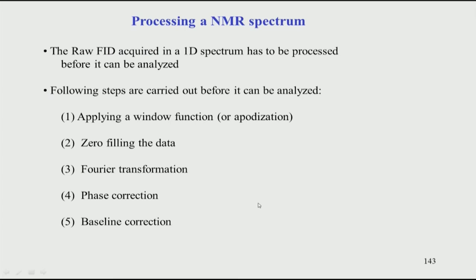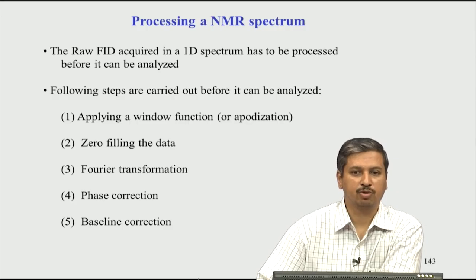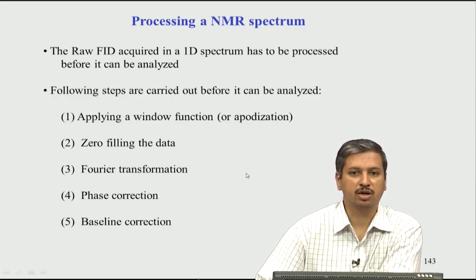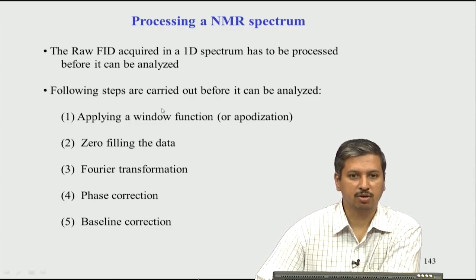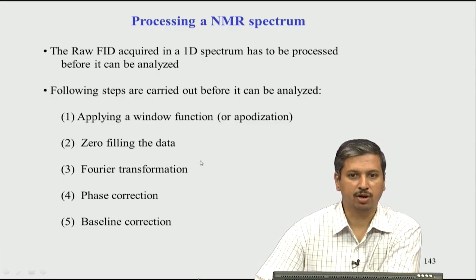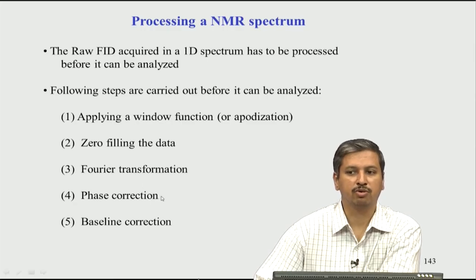Once the NMR data is recorded, the next step is data processing. The raw data from NMR is called the FID, recorded physically by the spectrometer, but that is not yet the spectrum. The spectrum is obtained by processing the raw data — massaging it through several steps and then converting it via Fourier transform. Even after Fourier transform, certain further operations are needed before the spectrum is ready for analysis.